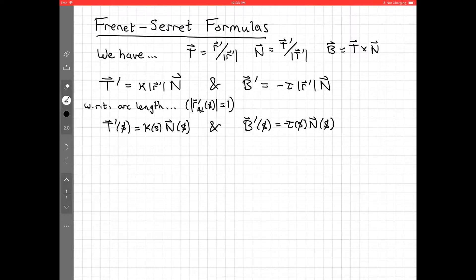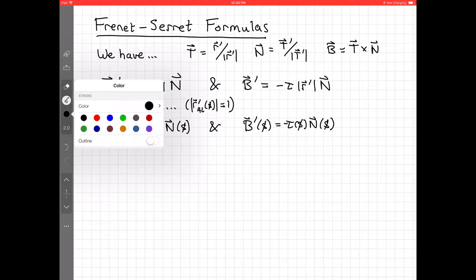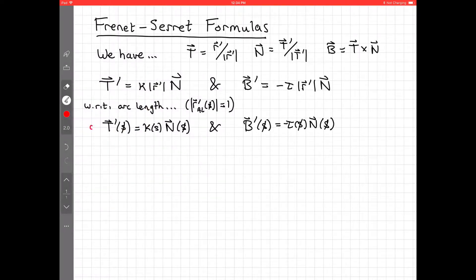The unit normal, and the derivative of the binormal is negative torsion times the length of r' times n. Or, again, if you're doing this in the context where you've re-parameterized with respect to arc length, these formulas look much nicer.